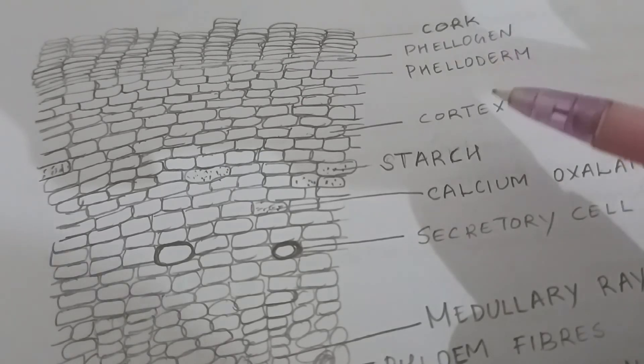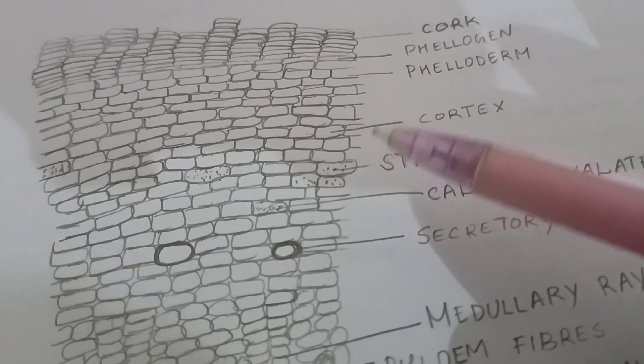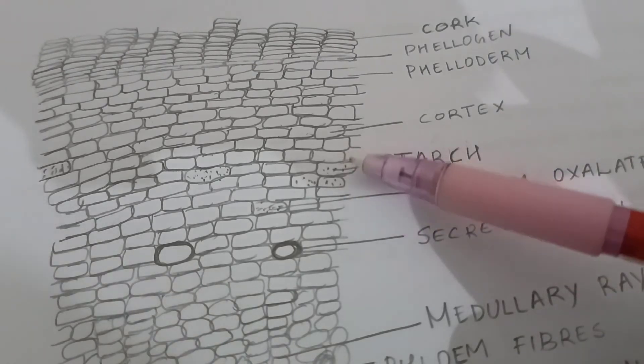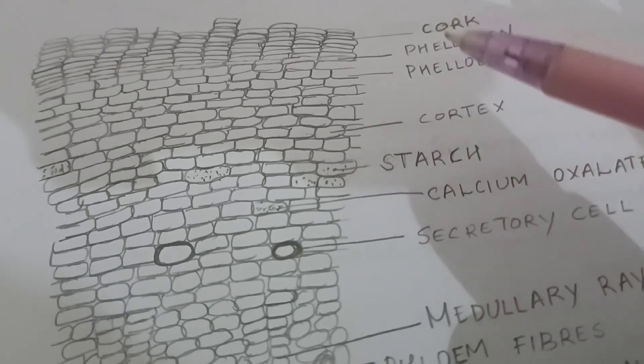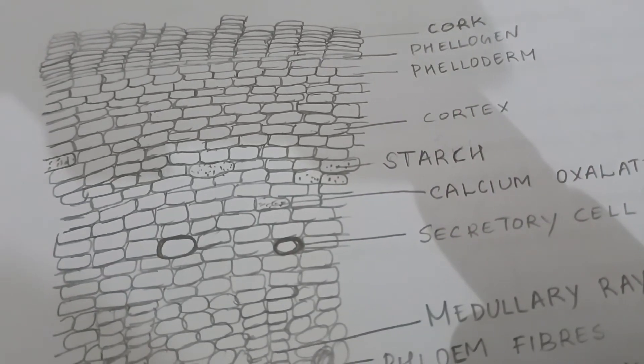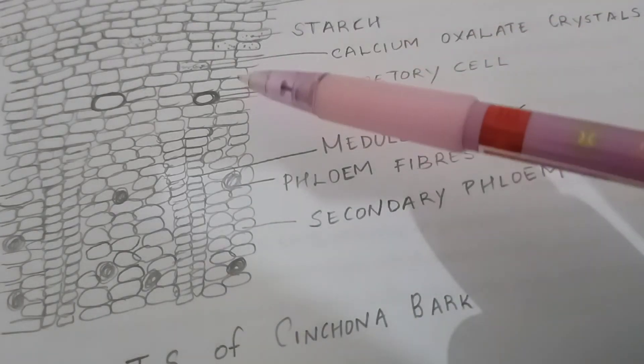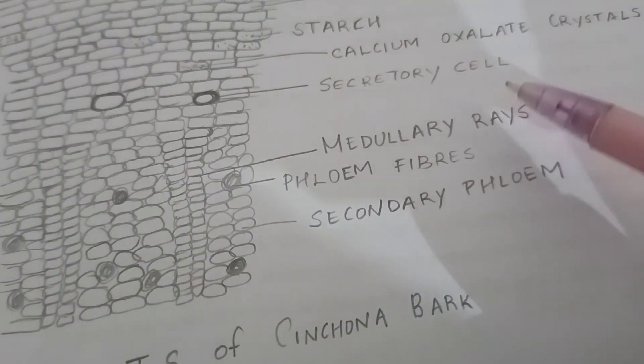Some of the cortical cells are filled with microsphenoidal crystals of calcium oxalate, while the rest with minute starch grains are 2-6 micron long, whereas starch grains are 6-10 micron in diameter. Isolated secretory cells are also found in the cortical parenchyma.